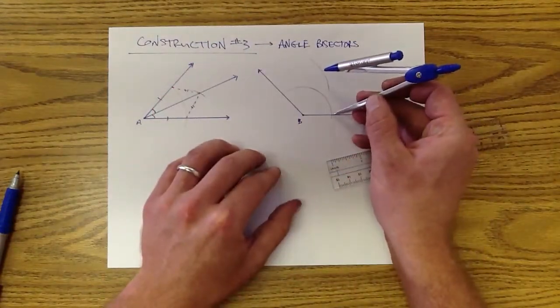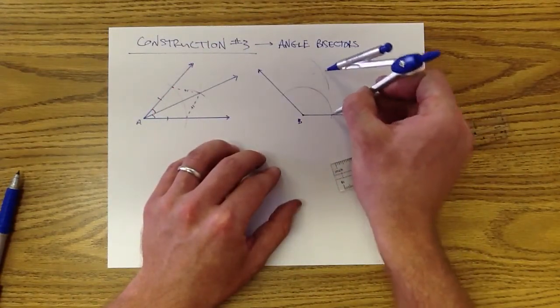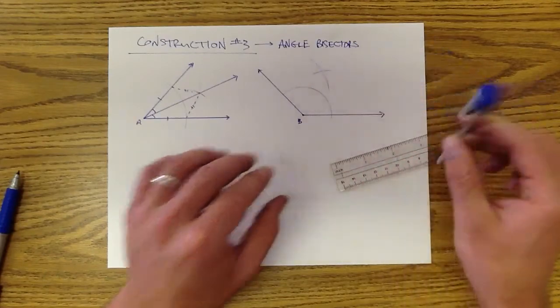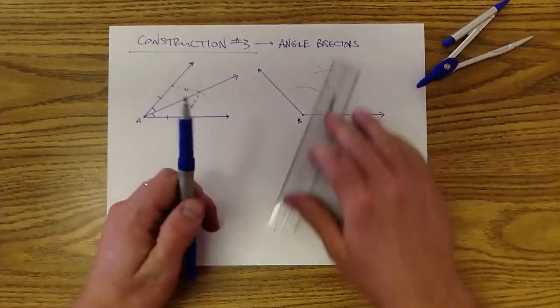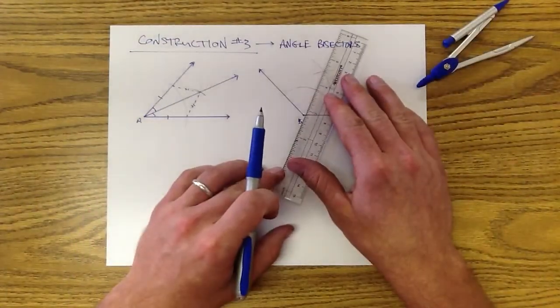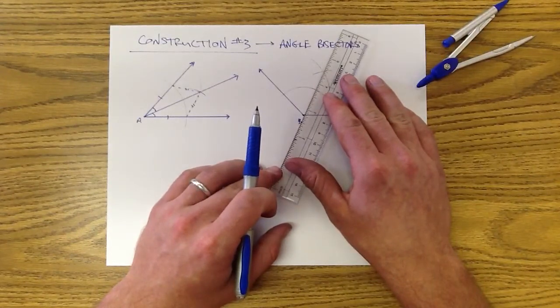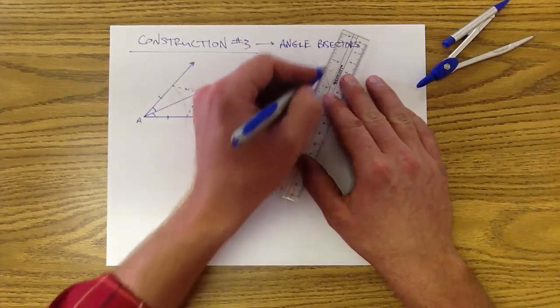Make an arc kind of in the middle. Do that with the other side also, keeping your distance the same. You've got two arcs that intersect in the middle there. Use point B, find where those two arcs intersect, draw a ray through it.